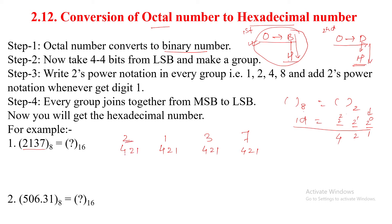Each digit is expressed in 2's power notation. The digit 1 comes directly as 1 — we are not using the 4 and 2 places, so those are 0. The digit 3 means 2 plus 1, so the 2 and 1 places are used. The digit 7 means 4 plus 2 plus 1, so all three places are used. Whatever digit you are using in the 2's power notation, that place gets a 1 and all other places get a 0. So the binary result is: 001 011 111.